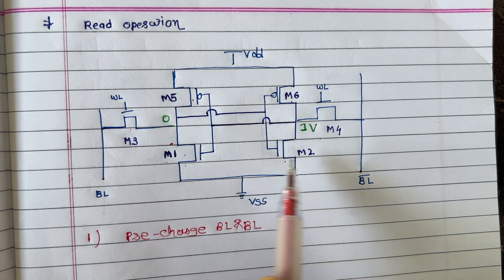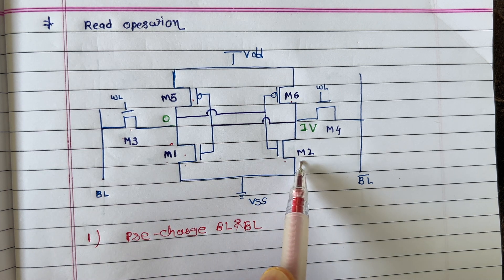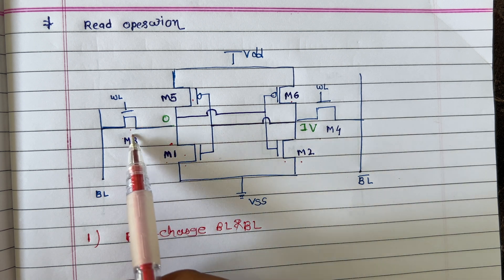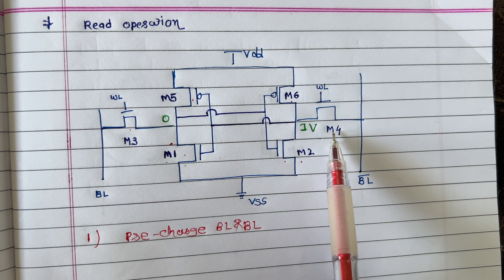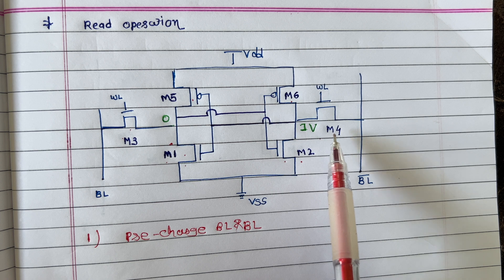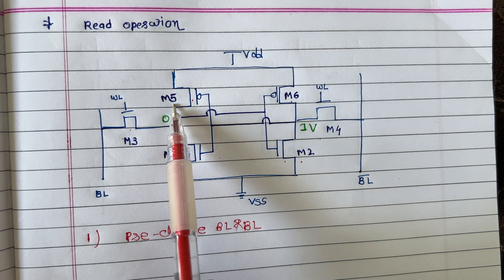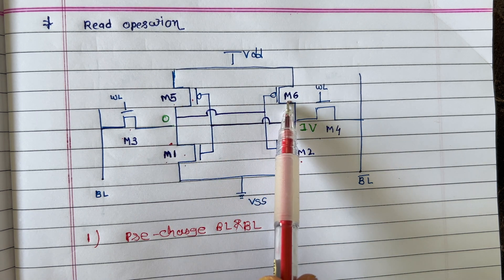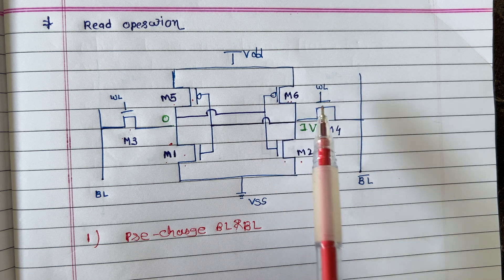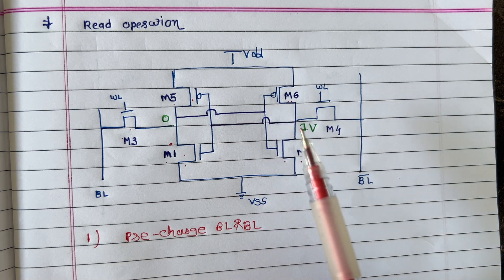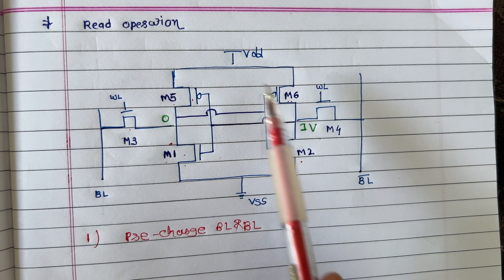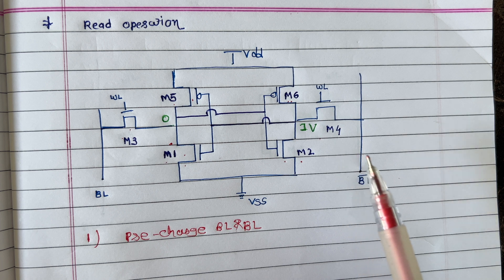This one is M1. M2 we call as a pull-down transistor, that is NMOS. M3 and M4 we call as access transistors, that is also NMOS. M5 and M6 are pull-up transistors, that is PMOS. So each transistor has a different importance in READ and WRITE operation.